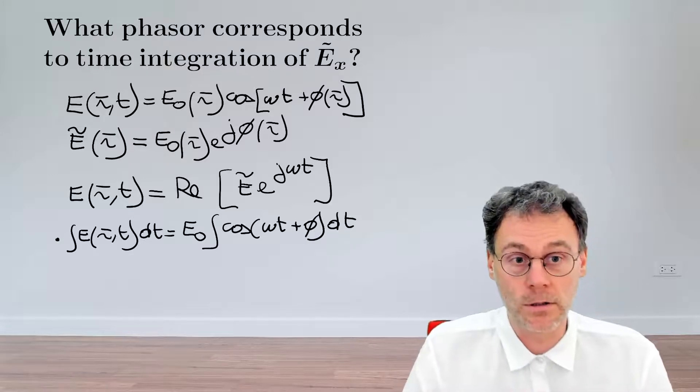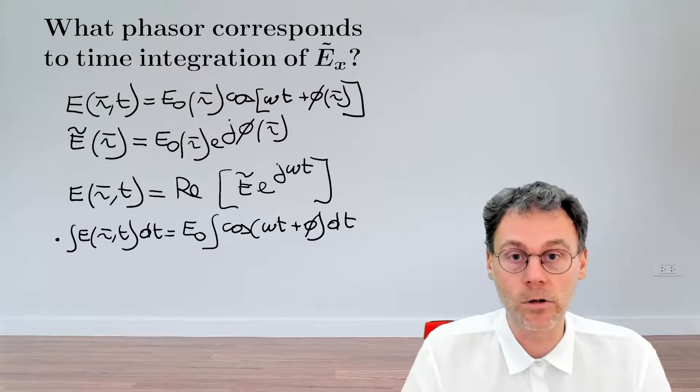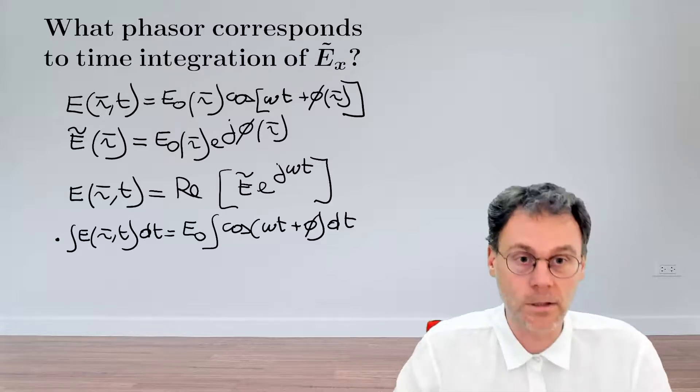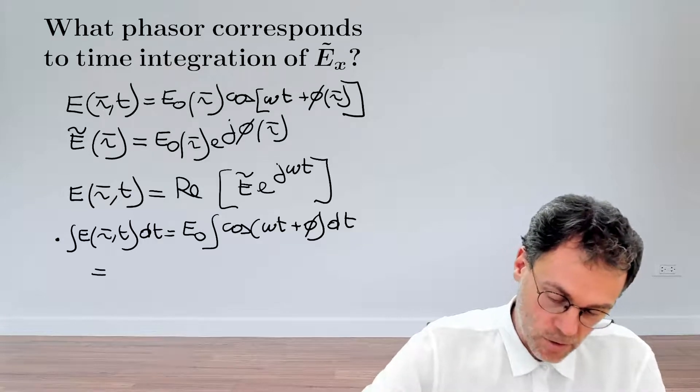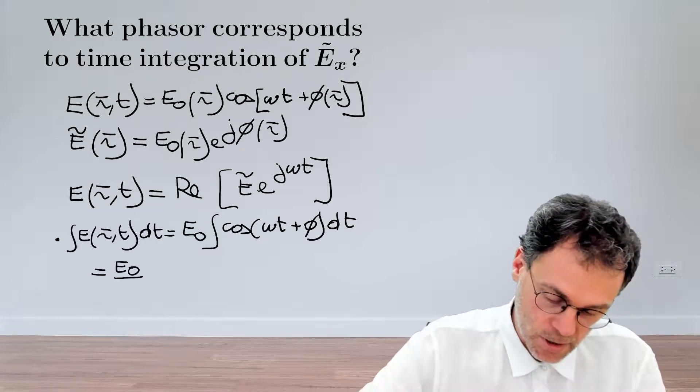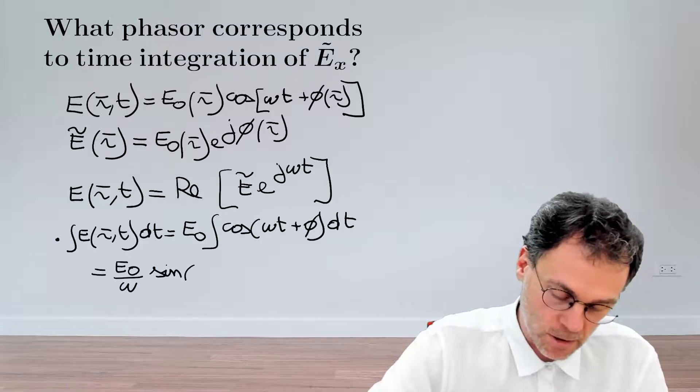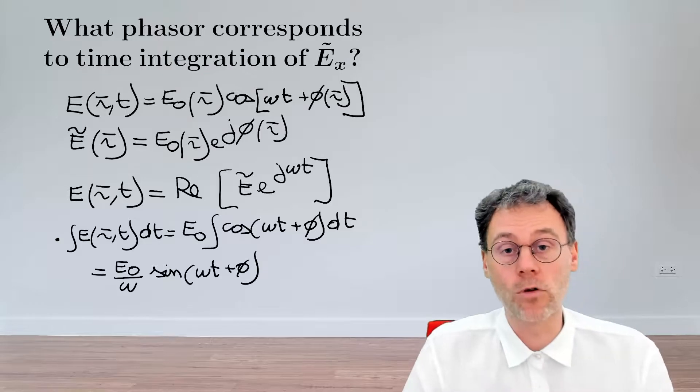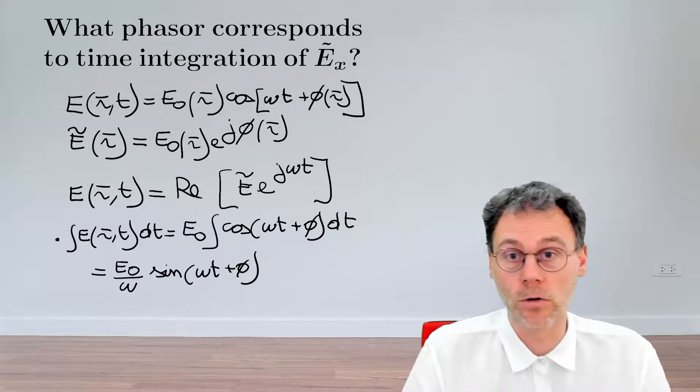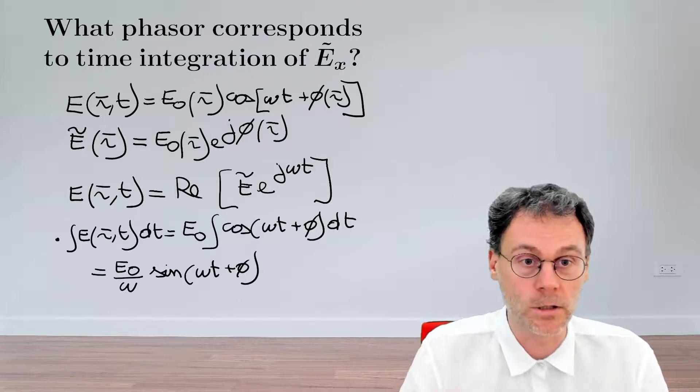So, I've dropped the spatial dependence here on the right-hand side to make the notation a bit lighter. So, once we have that, we can easily calculate that the integral becomes E₀ divided by ω sine(ω t + φ). Plus, of course, an integration constant, which we're not going to bother about because it's just a DC offset.